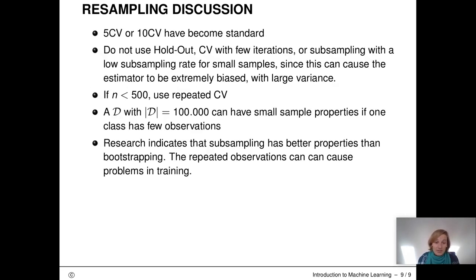So let's finish this unit with some practical comments. We already said that five or tenfold cross-validation are somewhat standard nowadays. If your dataset is small, it's not a very good idea to use something like holdout or cross-validation with few iterations or subsampling with a low subsampling rate. If you have a very small dataset, this can cause the estimator to be extremely biased. We recommend repeated cross-validation for this case. So especially if you have few observations, use repeated cross-validation. Below 500 observations is maybe a good rule of thumb.